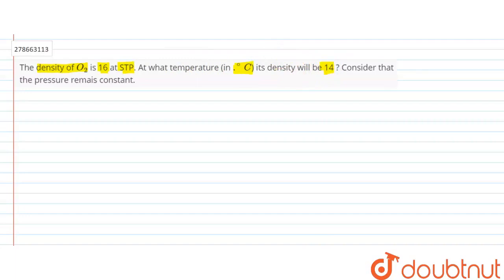So we are asked: given that the density of oxygen is 16, find the temperature when the density of oxygen is 14.